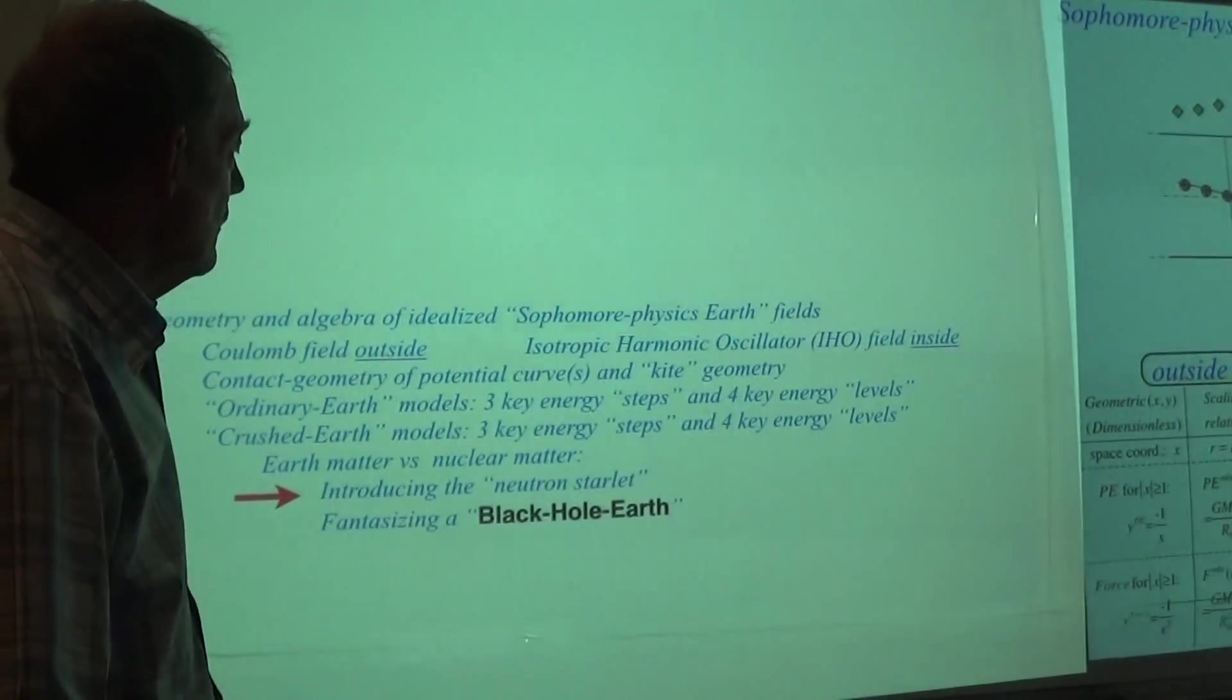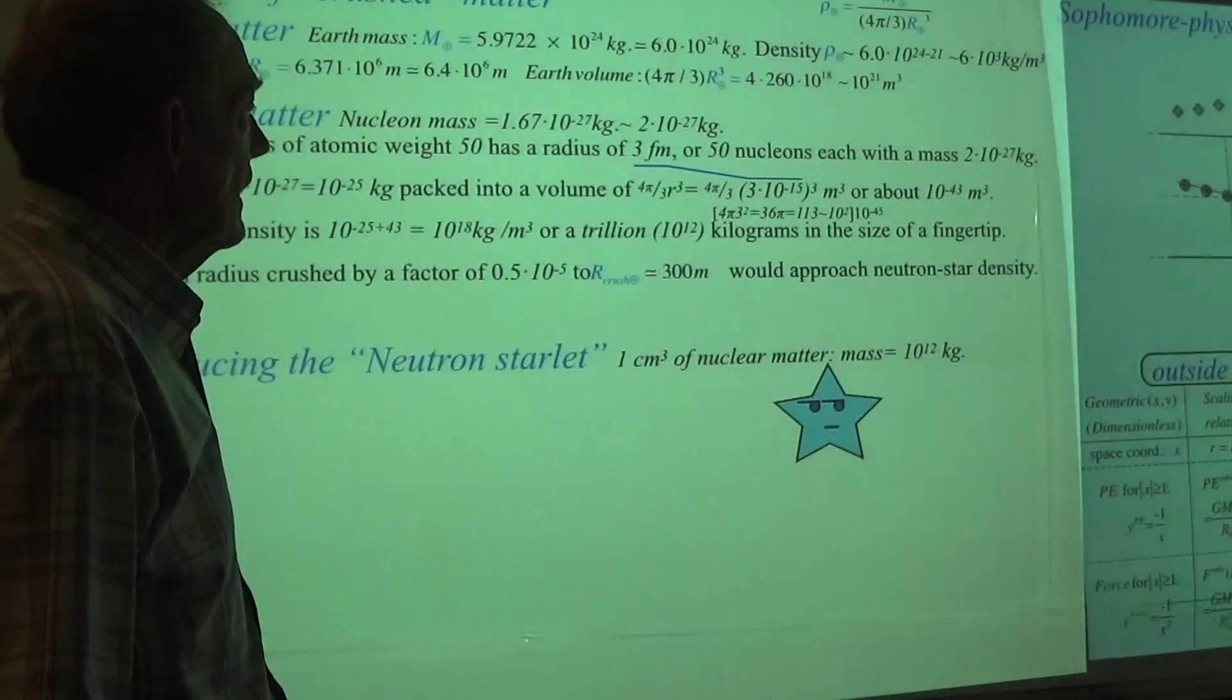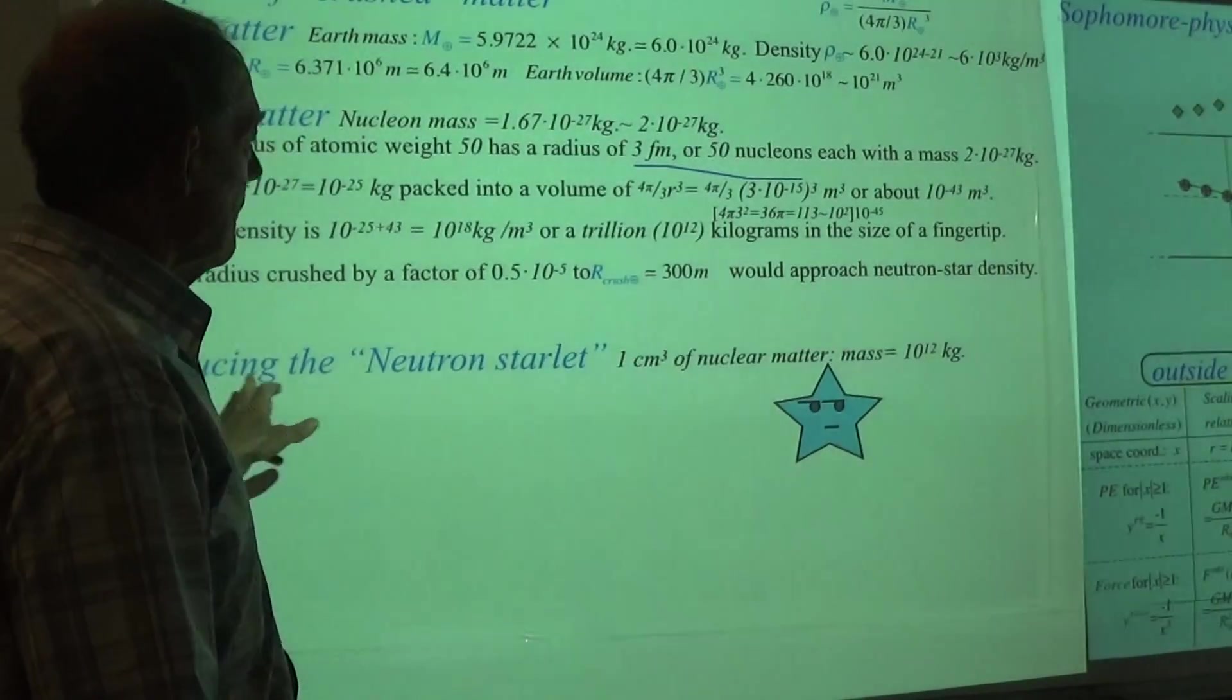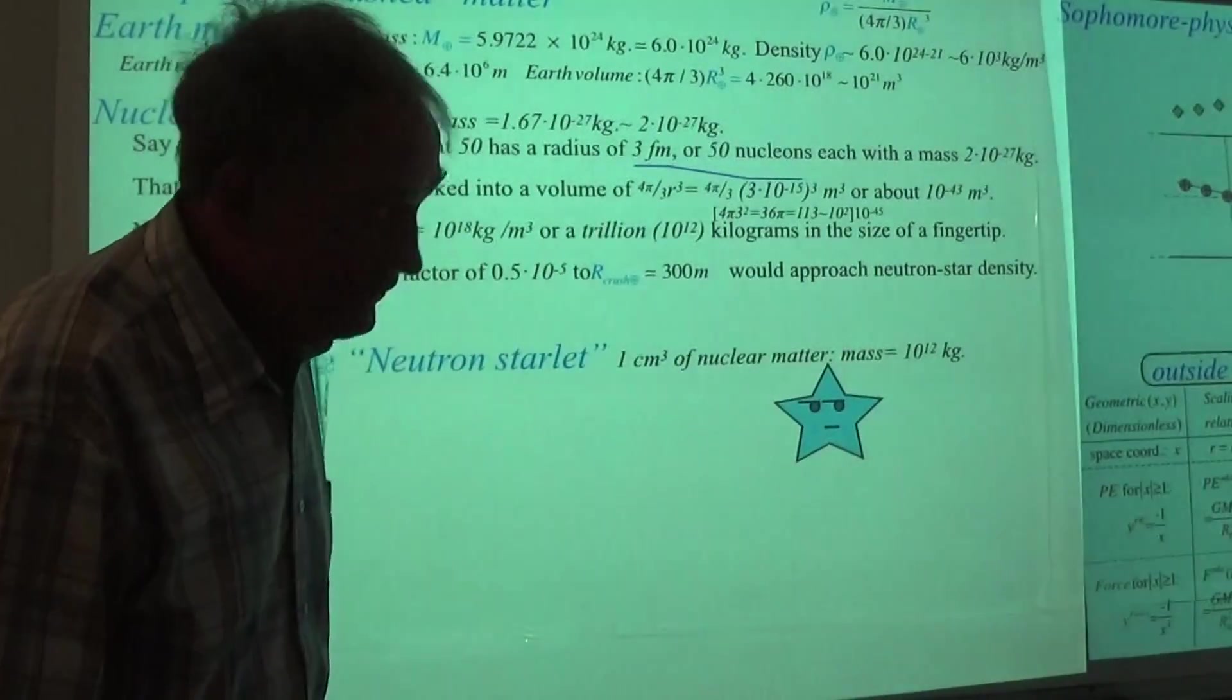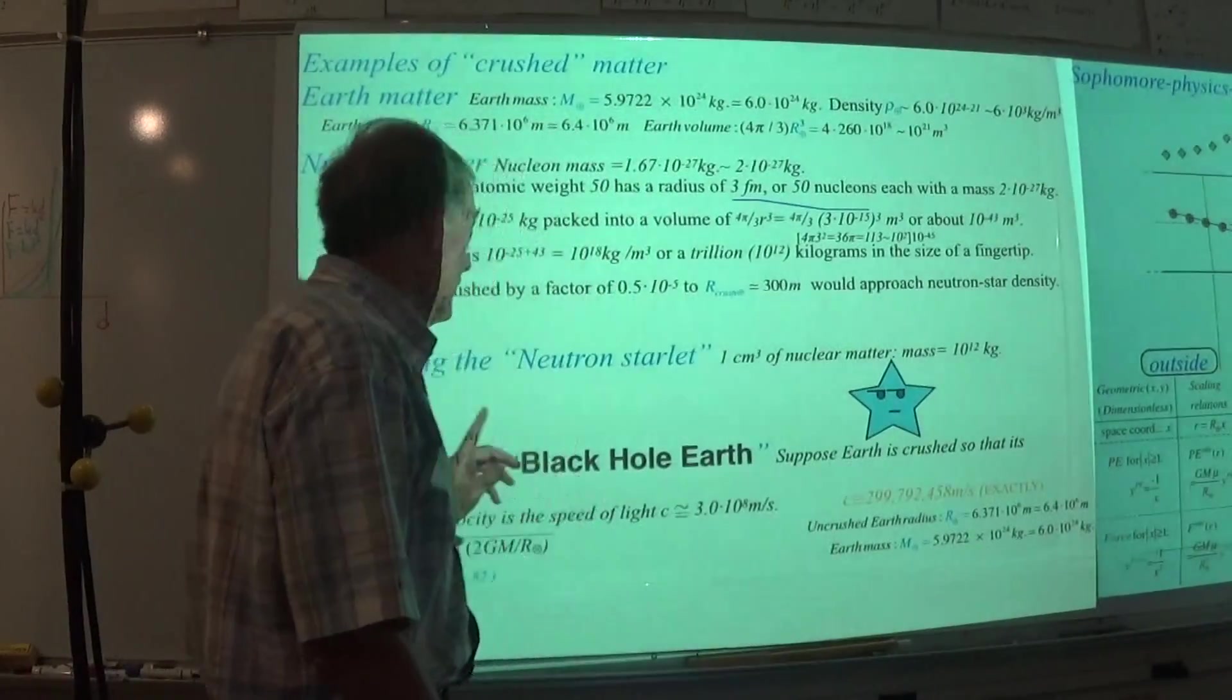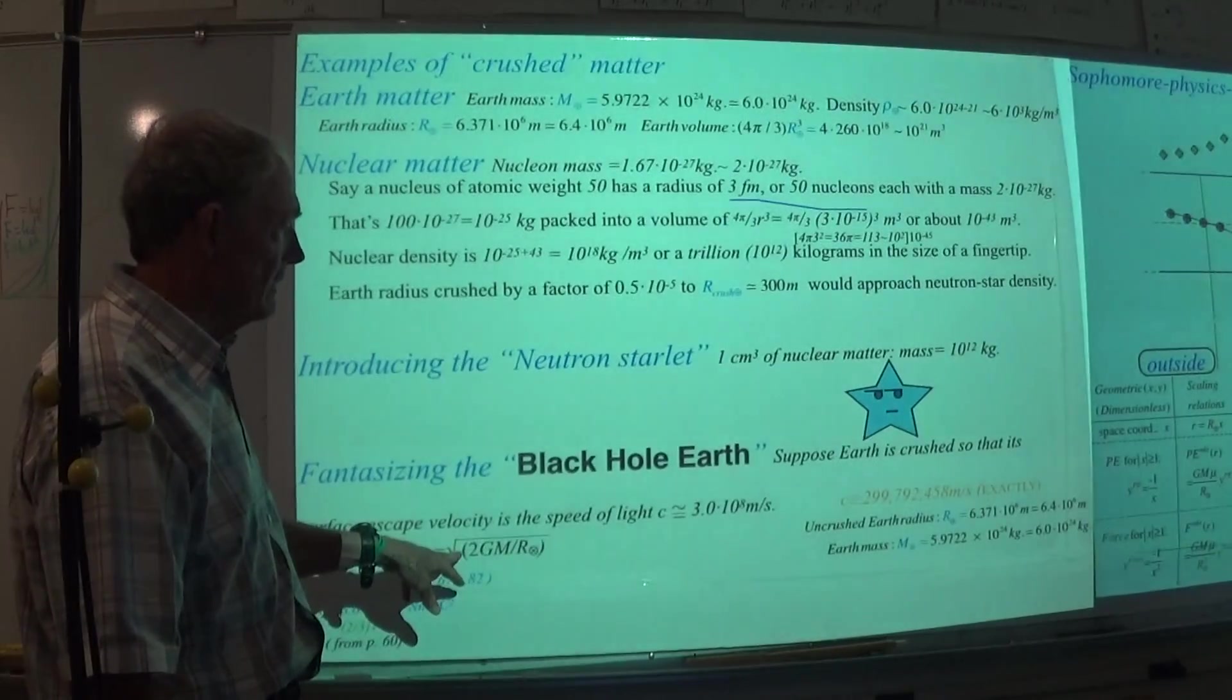Now, what would you get for the next most dense thing that we know about? And it's bad enough to crush to 300 meters, but how far do you have to crush poor old Earth to get not this density, but even more than that density for this, as I call the Black Earth.